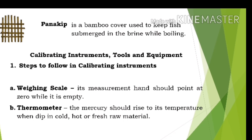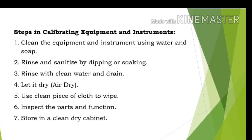Calibrating instruments, tools, and equipment. Steps to follow in calibrating instruments: For the weighing scale, its measurement hand should point at zero while it is empty. For the thermometer, the mercury should rise to its temperature when dipped in cold, hot, or fresh raw material. Steps in calibrating equipment and instruments: Clean the equipment and instrument using water and soap. Rinse and sanitize by dipping or soaking. Rinse with clean water and drain. Let it dry or air dry. Use a clean piece of cloth to wipe. Inspect the parts and function. Store in a clean, dry cabinet.